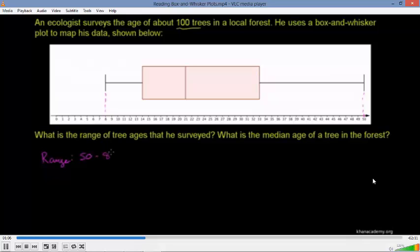So it's going to be 50 minus 8. So we have a range of 42. So that's what the whiskers tell us. It tells us that everything falls between 8 and 50 years, including 8 years and 50 years.